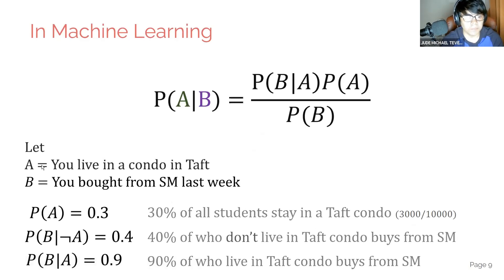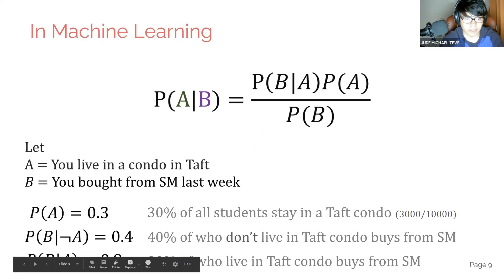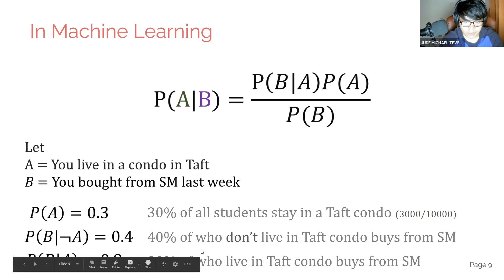Let's have a concrete example. Say A is the probability that you live in a TAF condo, and B is that you bought from SM last week. Let's assign some values. The probability of A is 0.3 — let's say in our dataset, 30% of all students stay in a TAF condo from a population of 10,000. And 40% of those who don't live in a TAF condo buy from SM, while 90% of those who live in a TAF condo buy from SM.